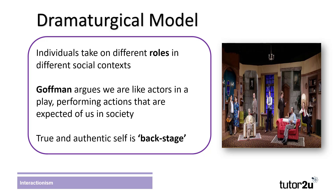A further interactionist explanation of how we make sense of the world is offered through the dramaturgical approach. This theory, put forward by Erving Goffman, suggested that individuals are like actors, taking on different roles in different social contexts. Goffman suggests that in social spaces, individuals behave in such a way to gain social approval by being good actors. These roles vary and change depending upon the social situation we are in, and who we might be interacting with.